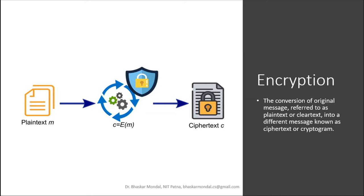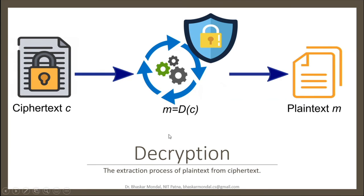The encryption process can be defined as follows. You have a plaintext M and an encryption algorithm E, which generates ciphertext C. So C equals E of M. On the other hand, at the time of decryption, you have ciphertext C and a decryption algorithm D. The plaintext M equals D of C. The extraction of plaintext from ciphertext is known as decryption.